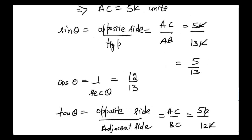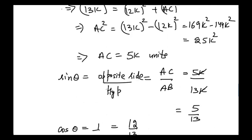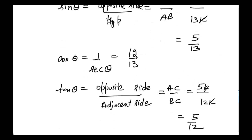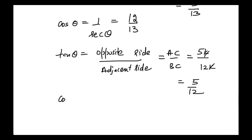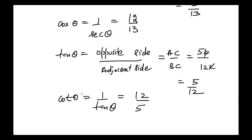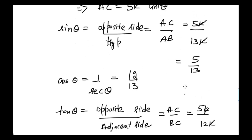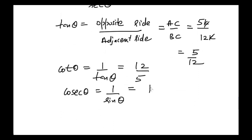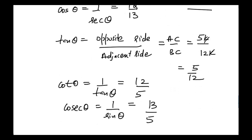We already have sine, cosine, tangent, and secant. The remaining ratios are cotangent and cosecant. Cotangent theta is the reciprocal of tangent theta, so cotangent theta equals 12 divided by 5. Cosecant theta is the reciprocal of sine theta, and since sine theta equals 5 divided by 13, cosecant theta equals 13 divided by 5. These are all the trigonometric ratios.